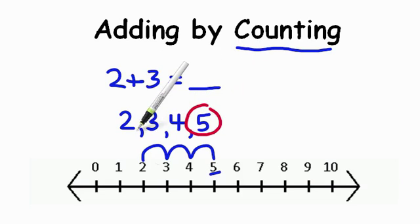We've counted up 3 more numbers, 3, 4, 5, and we get an answer of 5. So by counting on your numbers, you can get to that number. You've got to make sure that you remember how many that you're counting up.